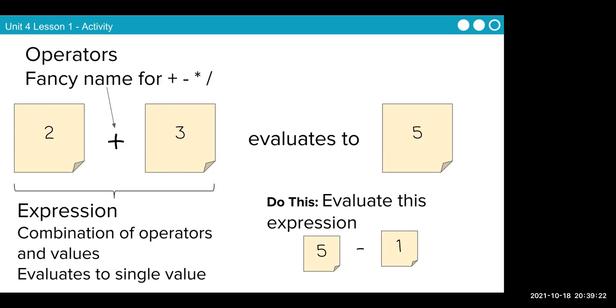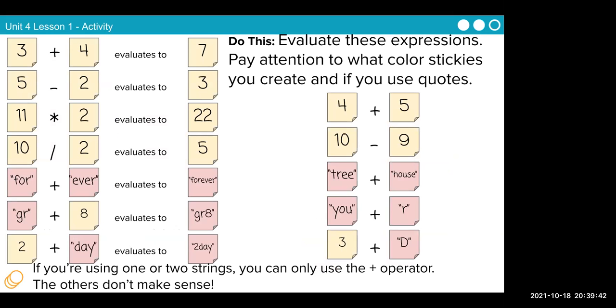Do this. Evaluate this expression, five minus one. What does that evaluate to? Right. It evaluates to four. So five minus one just evaluates to four. It's just regular math. Let's go through these. Three plus four evaluates to seven. Five minus two evaluates to three. It's just the straight math. There's nothing fancy here. Eleven times two, 22. Ten divided by two is five.